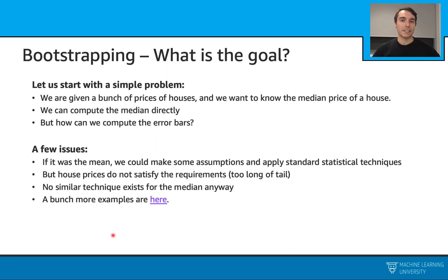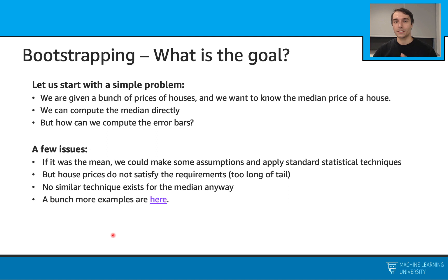These classical statistical methods usually make some assumptions. For example, they may assume that we have a normal distribution in our population, or sometimes they assume that we have a large enough sample size. If our problem falls outside of these assumptions, we will need to use some alternative techniques, and bootstrapping is one of them.